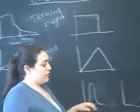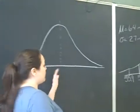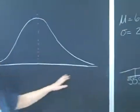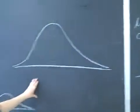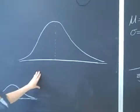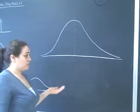When we do have symmetrical data, we use the normal distribution bell curve. And it's very useful when calculating out different things.